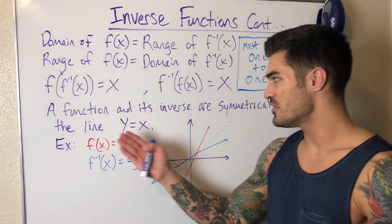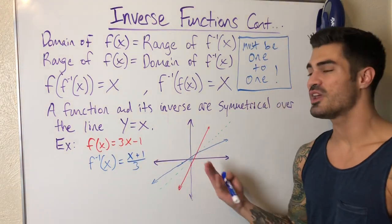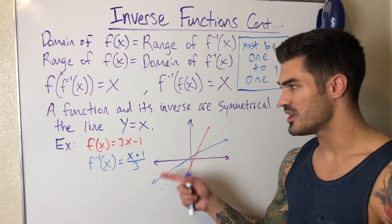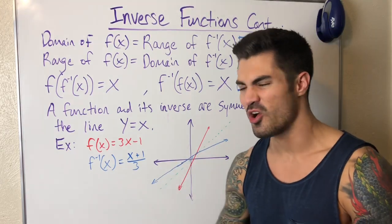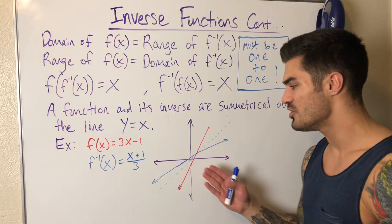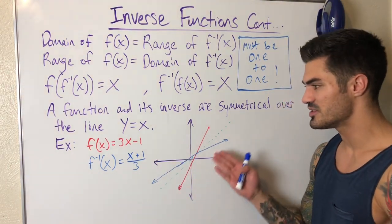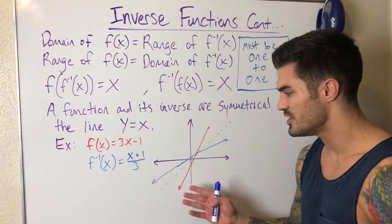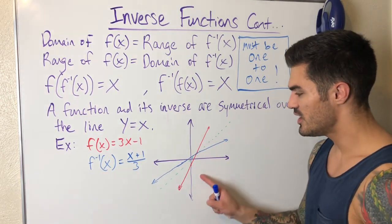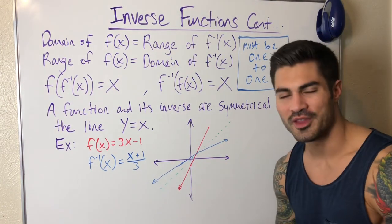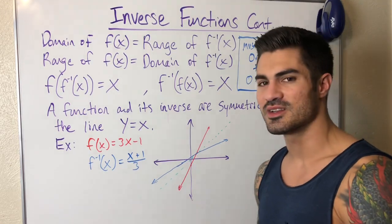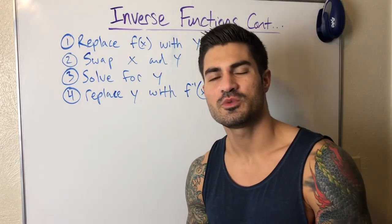Lastly — and I missed this in the last video, sorry — a function and its inverse are symmetrical over the line y = x. With more complicated inverses it's harder to see, but it's still good to know. In this simpler example with two linear equations, you can see they reflect over the line y = x. This can come up on quizzes and exams.